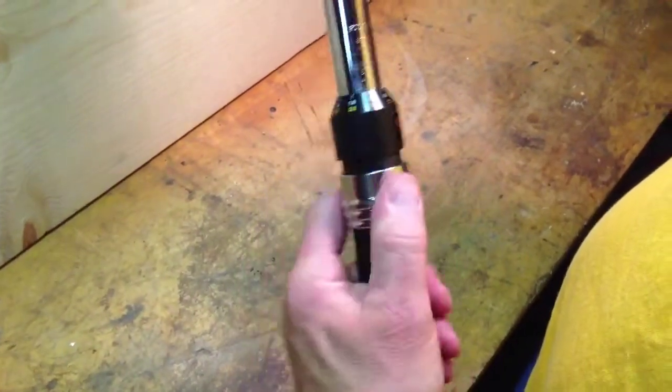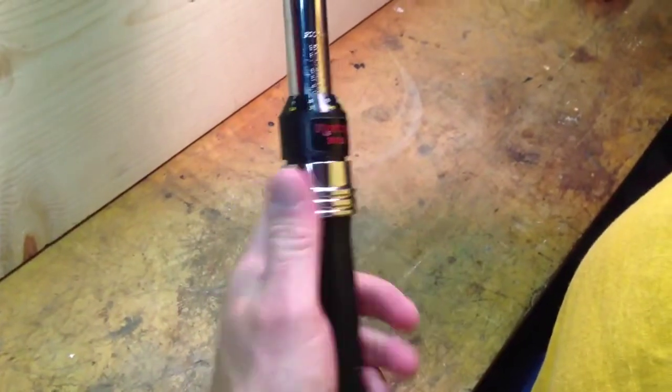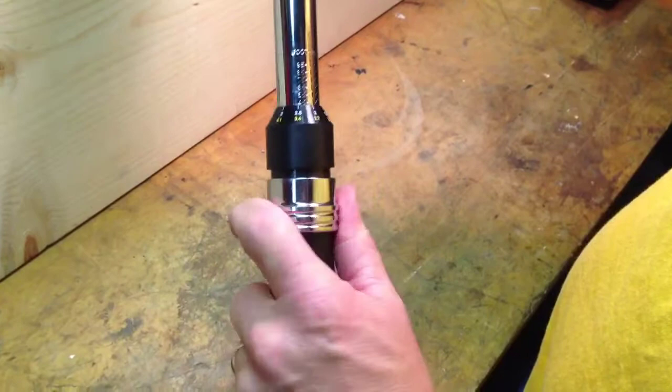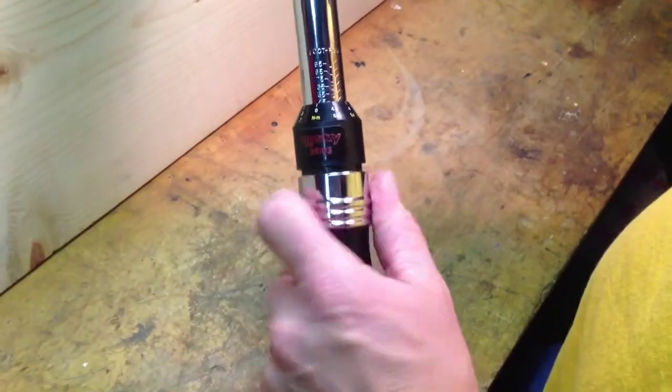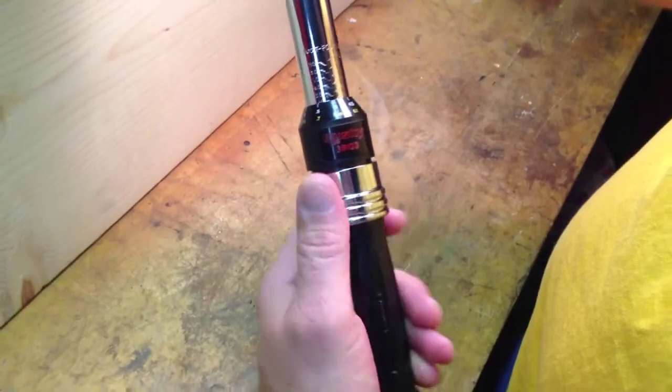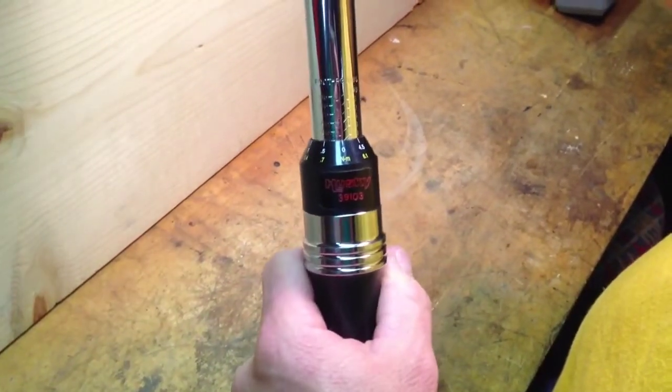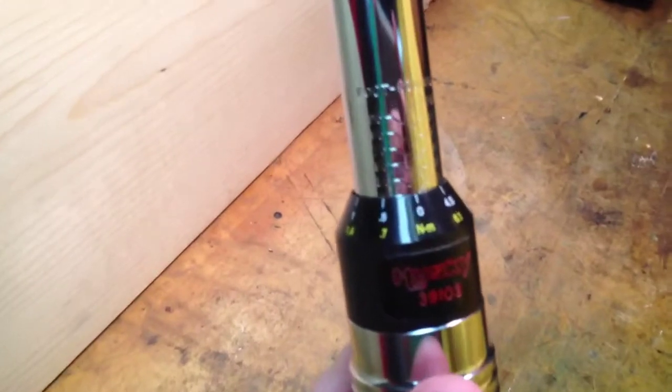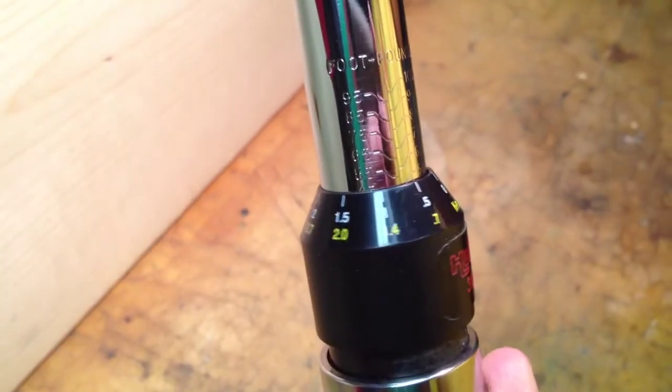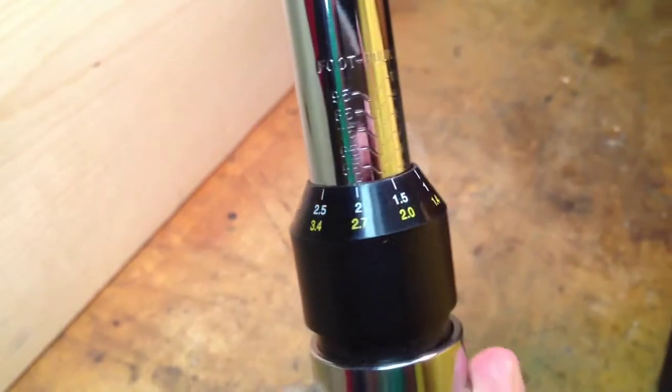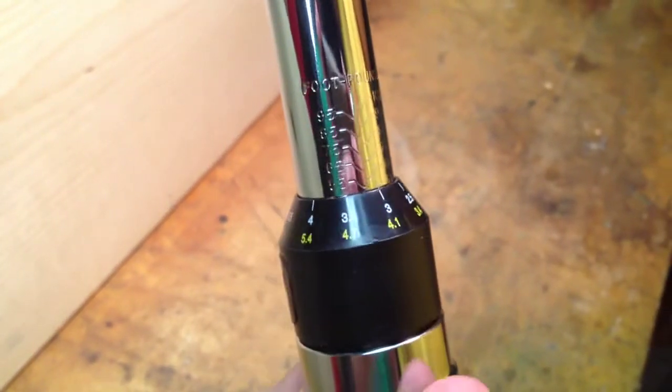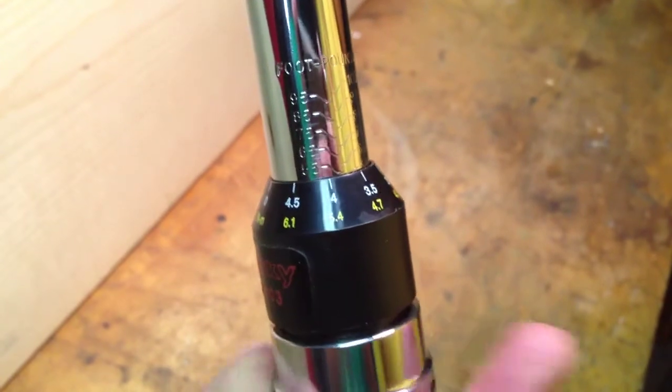Now the next torque setting I'm going to go for is 54 foot-pounds of torque. So I'm going to pull the locking collar down and twist my handle clockwise till it gets to right around 50 foot-pounds of torque. Now you'll notice that every complete turn of the handle is 5 foot-pounds of torque. So I'm going to turn it to 50. Once I get to 50, what I'm going to do is slowly turn it one by one till it gets to 4. So I started at 50 plus the 4 puts me at 54 foot-pounds of torque.